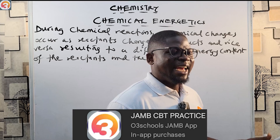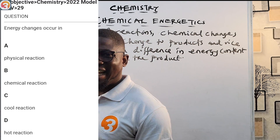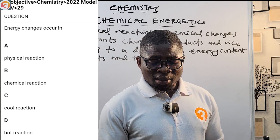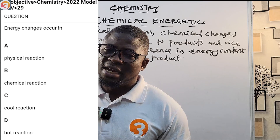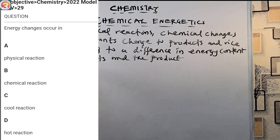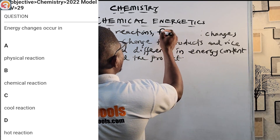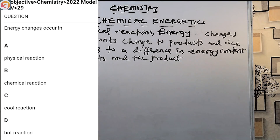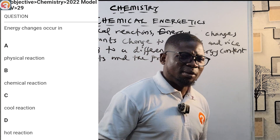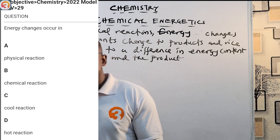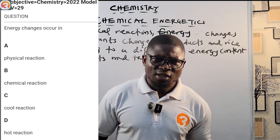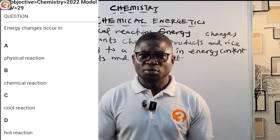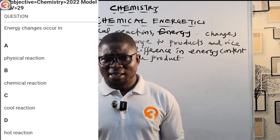This is a 2022 question, number 29: 'Energy changes occur in — A: a physical reaction, B: a chemical reaction, C: a cool reaction, D: a hot reaction.' The answer is B — a chemical reaction — because during chemical reactions energy changes occur as reactants turn to products, old bonds are broken and new bonds are formed. In some reactions energy is absorbed (endothermic) and in others energy is released (exothermic). See you in the next class — thank you for watching!